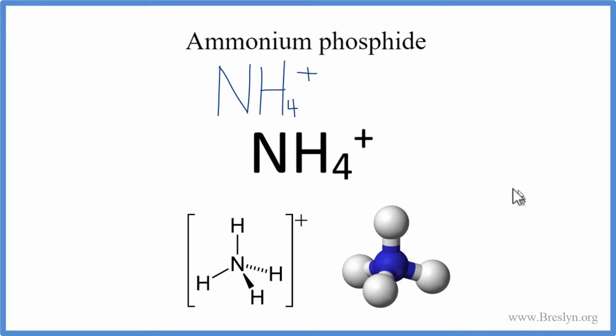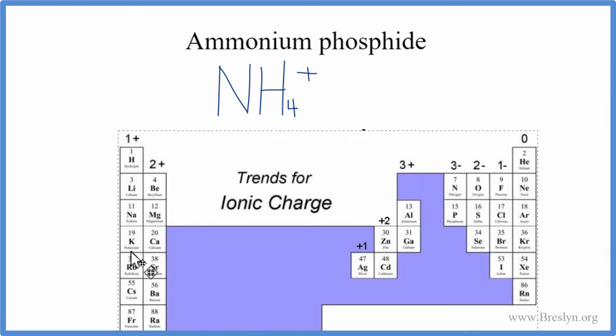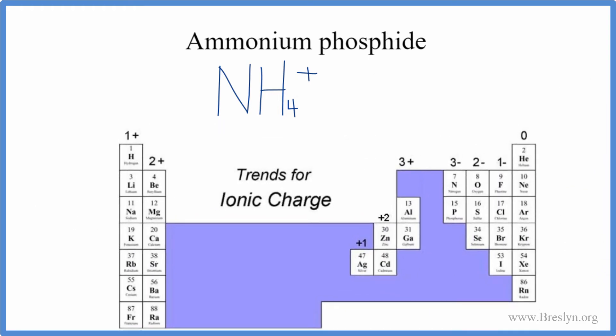Next, we'll write the phosphide ion. So we'll go to the periodic table for phosphide. That ion comes from phosphorus. We'll pull our periodic table up here to find the charge of the phosphide ion. We find phosphorus, which is right here. That has a 3 minus charge. So we'll put P for phosphorus. That has a 3 minus ionic charge.